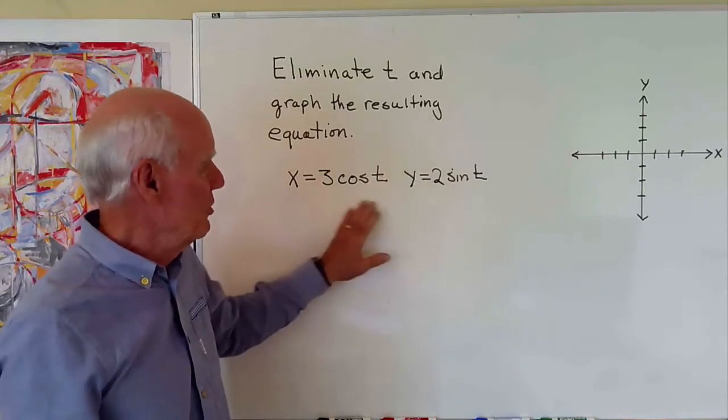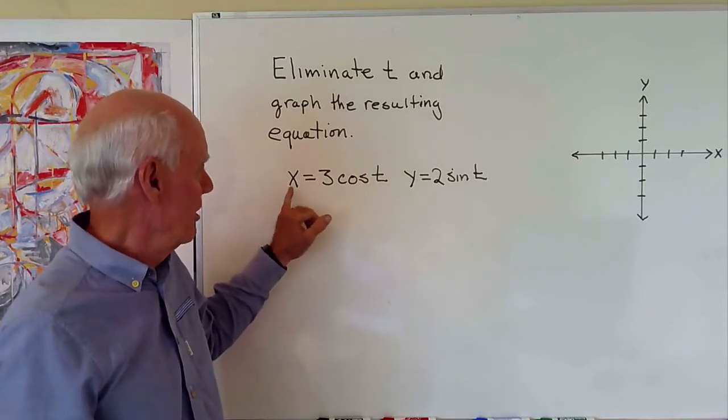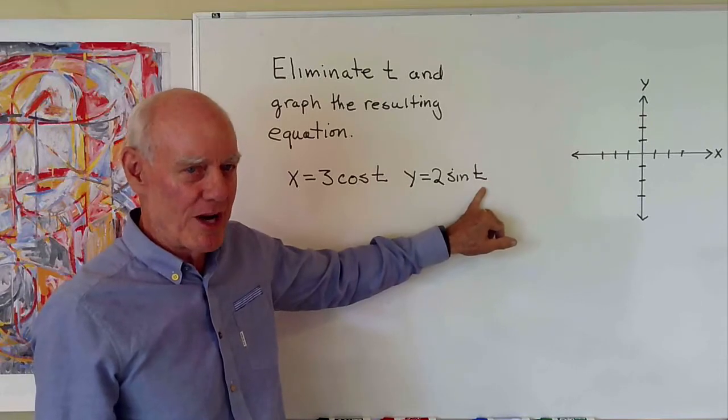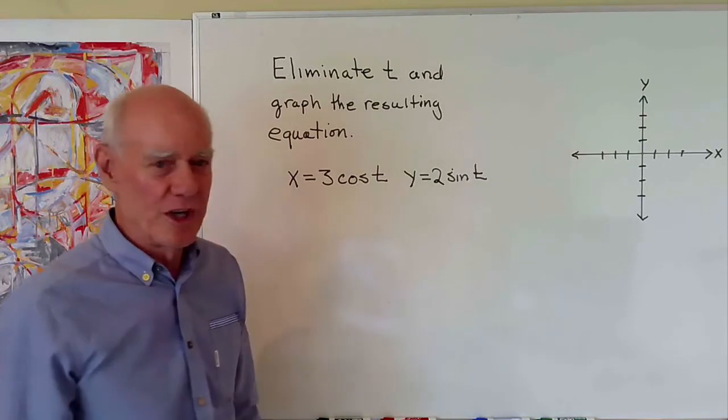But what we want to do is do this algebraically, so we have three variables: x, y, and then t. And t is called the parameter here, so we want to find a way to eliminate t.